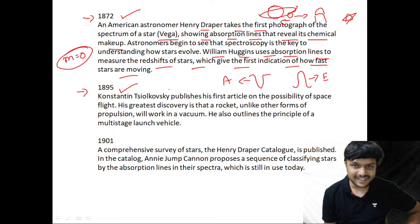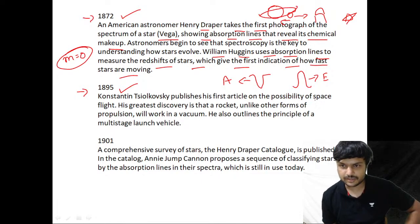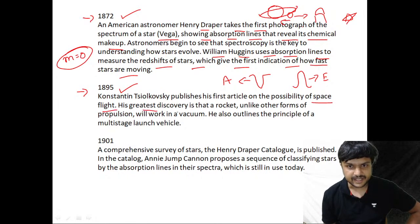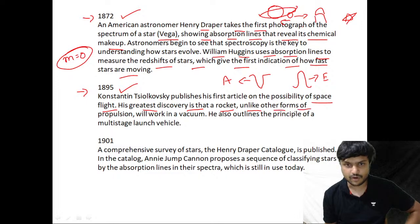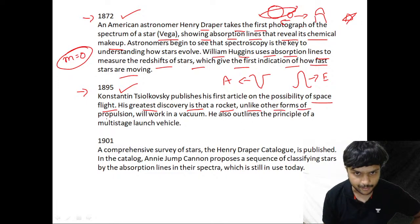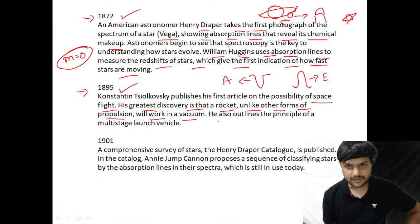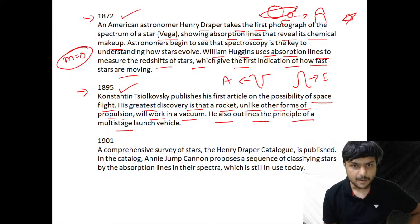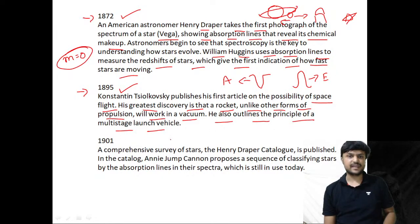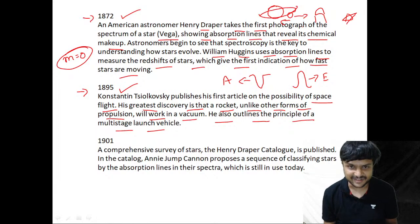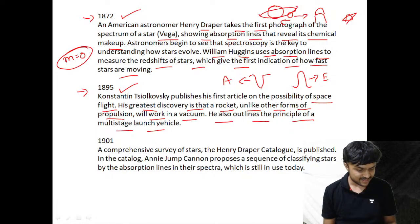In 1895, Konstantin Tsiolkovsky publishes the first article on the possibility of space flight. His greatest discovery is that a rocket, unlike other forms of propulsion, will work in a vacuum. He also outlines the principle of a multi-stage launch vehicle — this is where we begin talking about rocket propulsion.